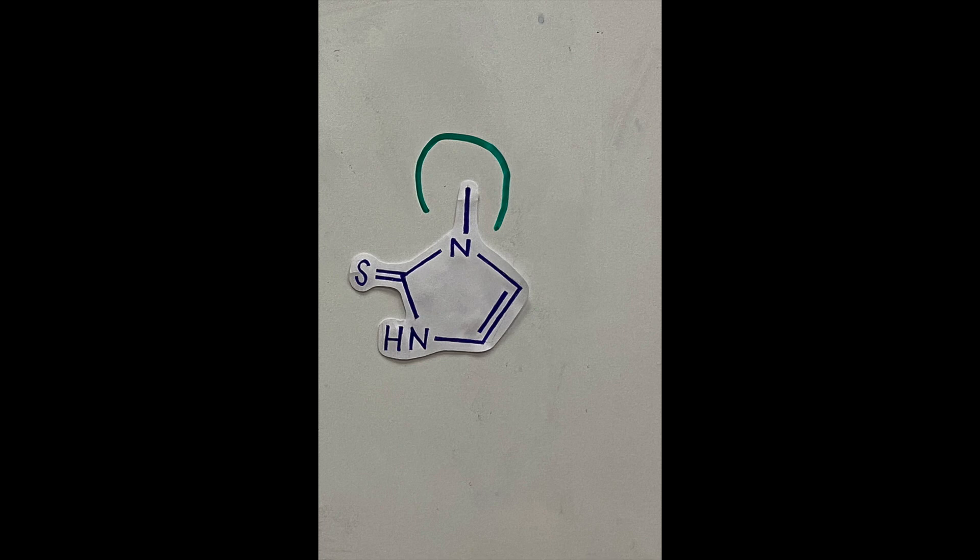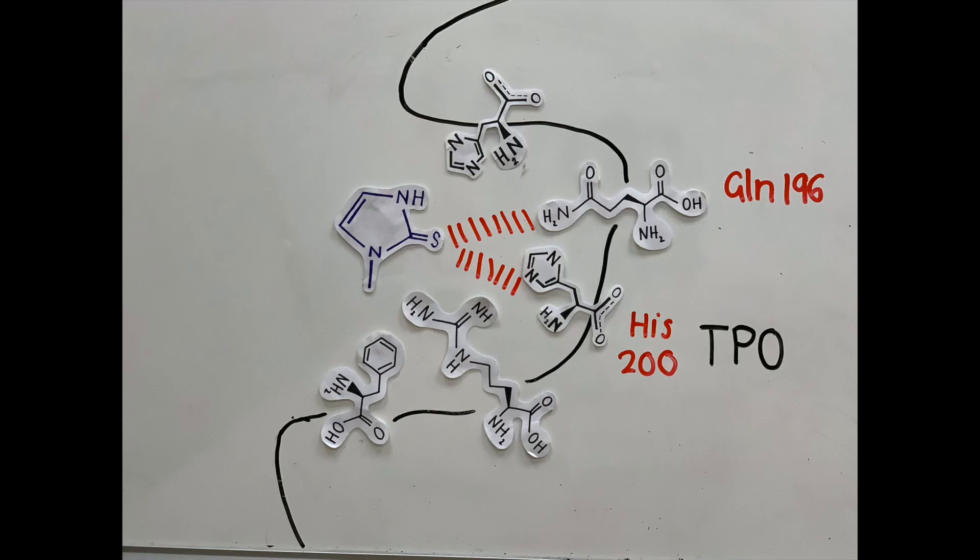The methyl group carbon would form van der Waals contacts with the histidine-200. The carbons within the ring would interact with arginine-357.